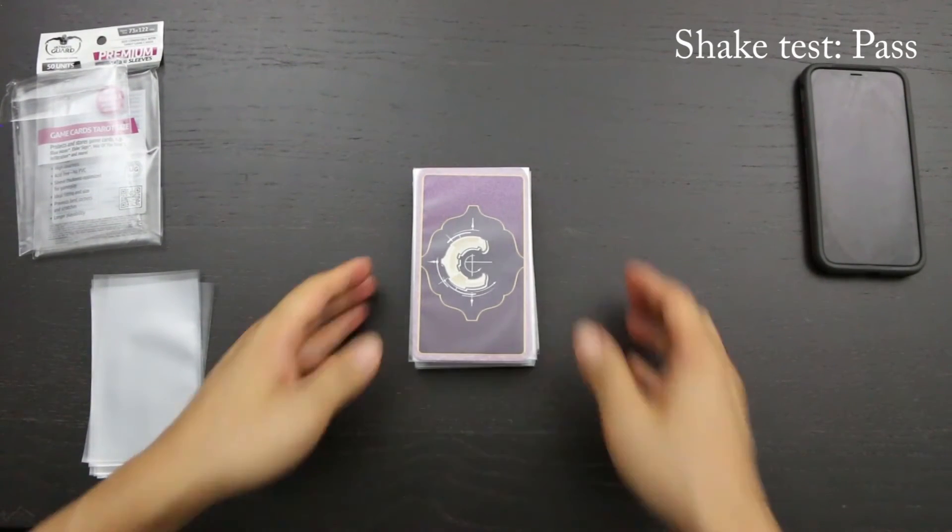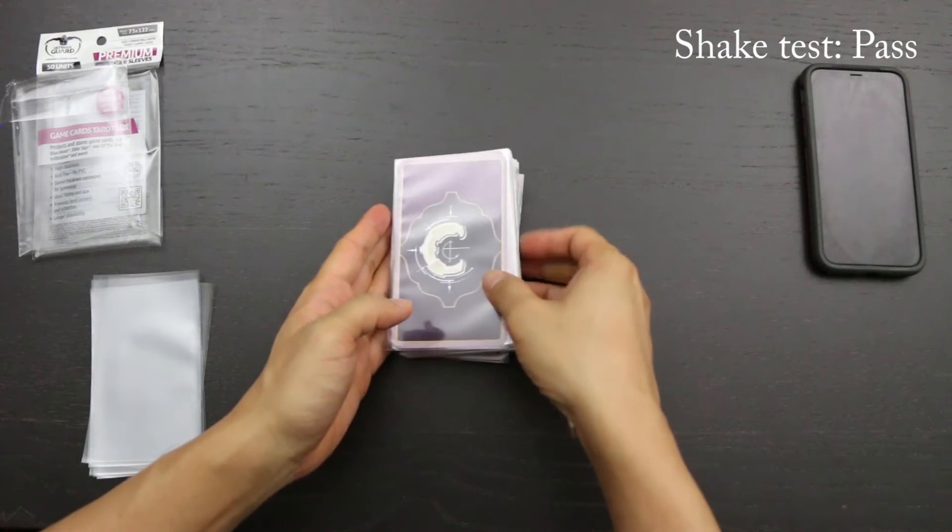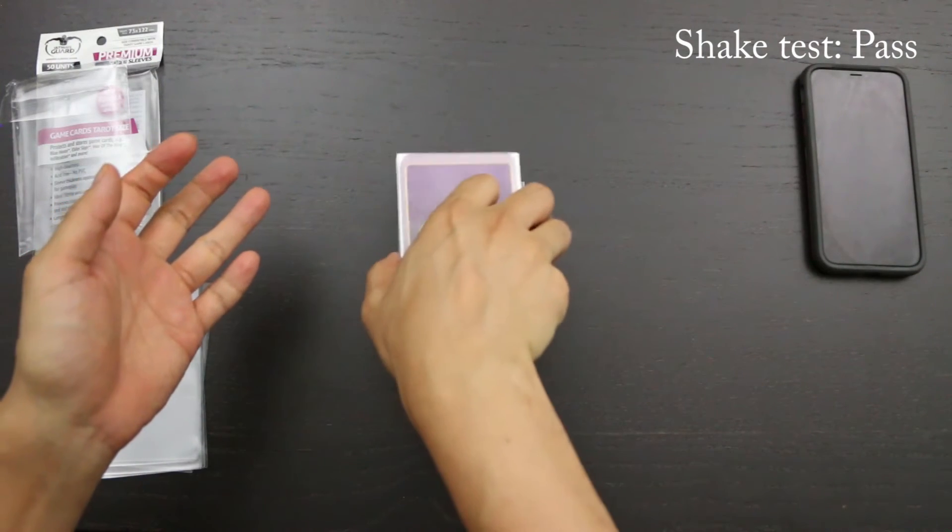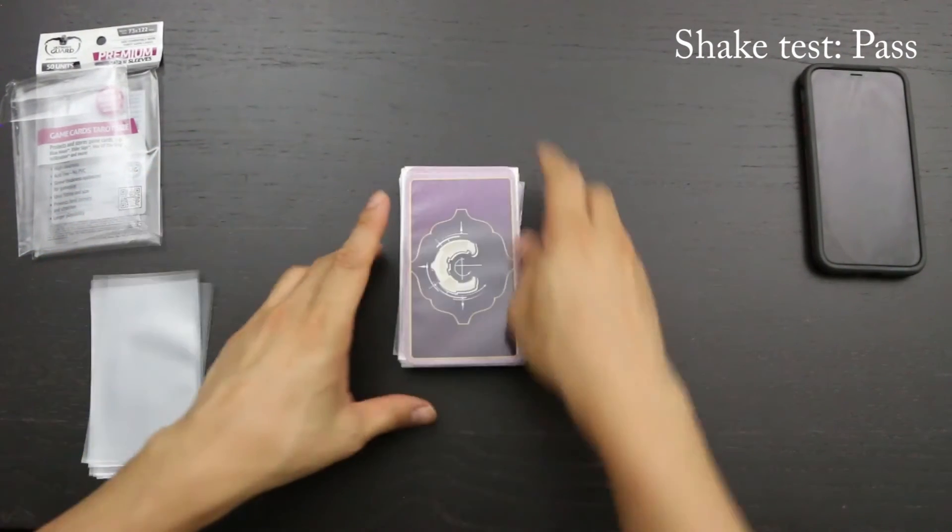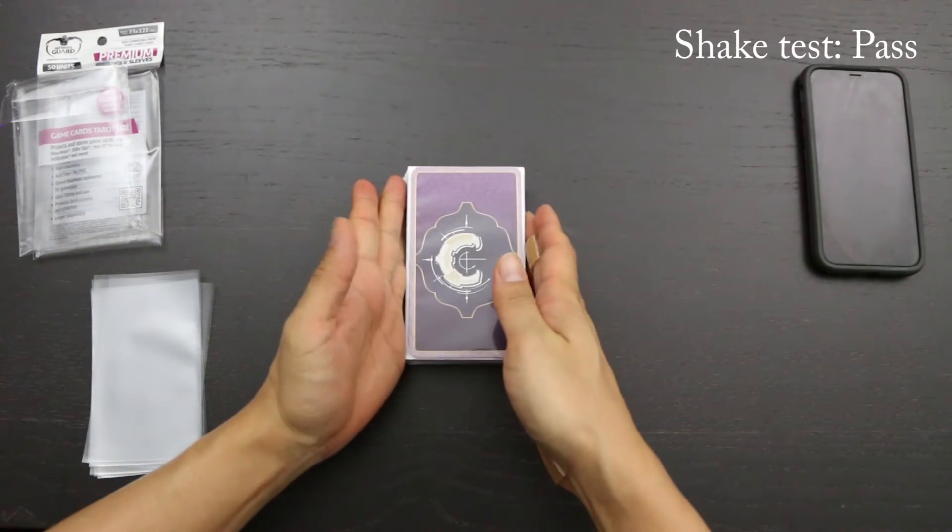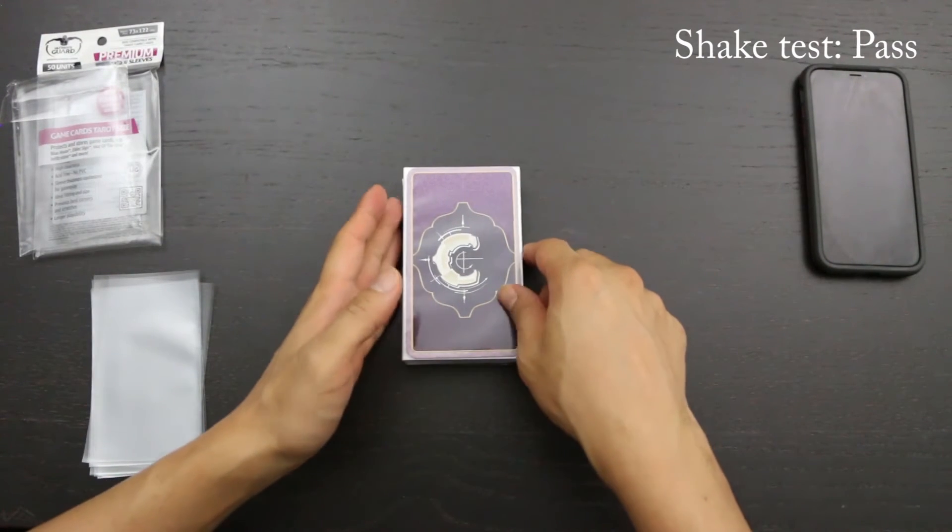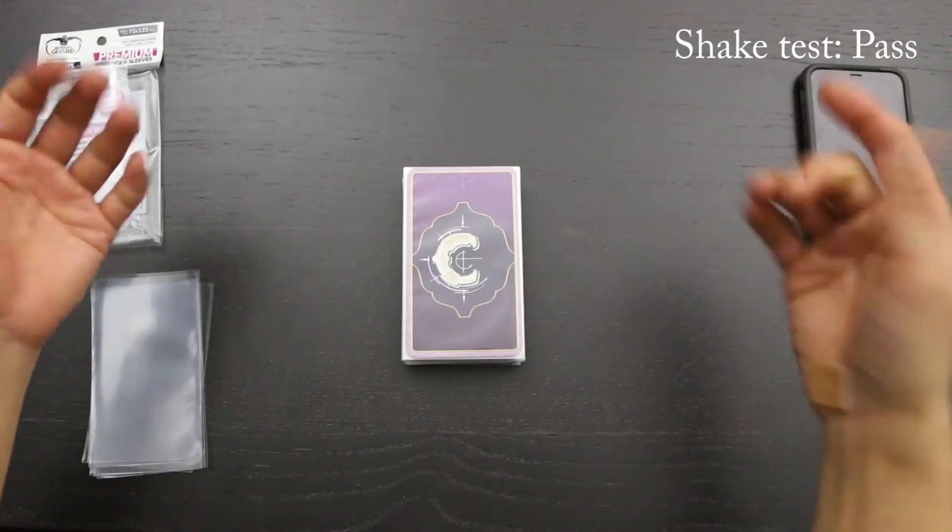It barely budged, but that's not a surprise. These sleeves are fairly sticky to each other in terms of static and they are in very large cards. So I think the chances of them falling are going to be pretty low, even with a fairly high deck. That is a pass.